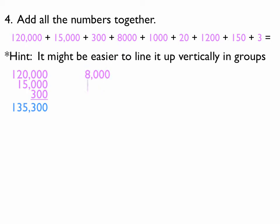Again, I'm going to do the next three. That's going to be 8,000, 1,020. I end up with 9,020. My last group, my smallest group, is 1,200, 150, and 3. So, that's 1,353.